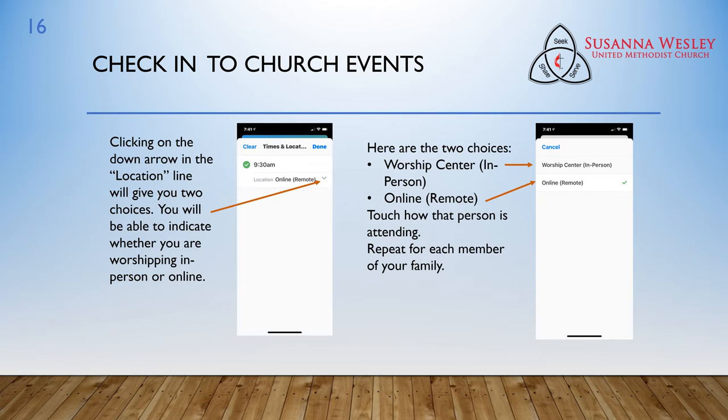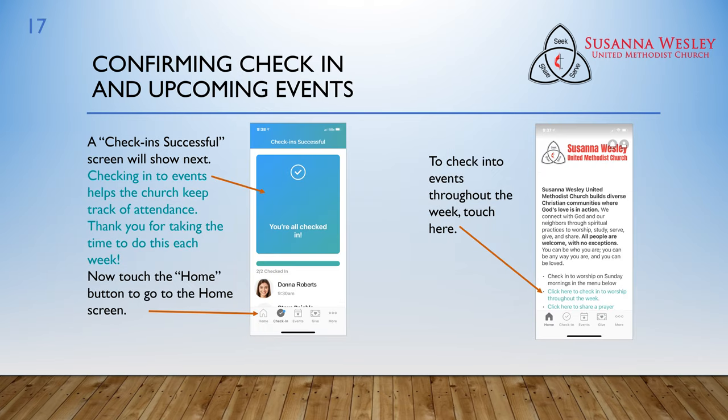Clicking on the down arrow in the location line will give you two choices. You will be able to indicate whether you are worshiping in person or online. Here are the two choices: Worship Center — In Person, or Online Remote. Touch how that person is attending and then repeat for each member of your family. A Check In Successful screen will show next. Checking into events helps the church keep track of attendance. Thank you for taking the time to do this each week.